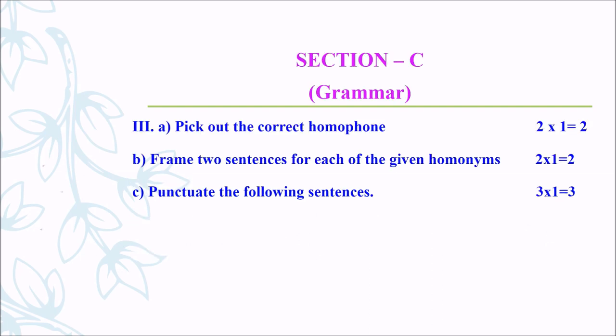Section C, Grammar. Roman Letter 3, Pick out the correct homophone. They have given it in a fill-up format. You read the sentence, and inside the bracket they will give you 2 words which have different meaning and different spelling but a similar sound. According to the given sentence, you have to choose the correct word. In homophones, you will get 2 questions, each carrying 1 mark, so totally 2 marks for Homophones. Next one is Frame 2 sentences for each of the given homonyms.